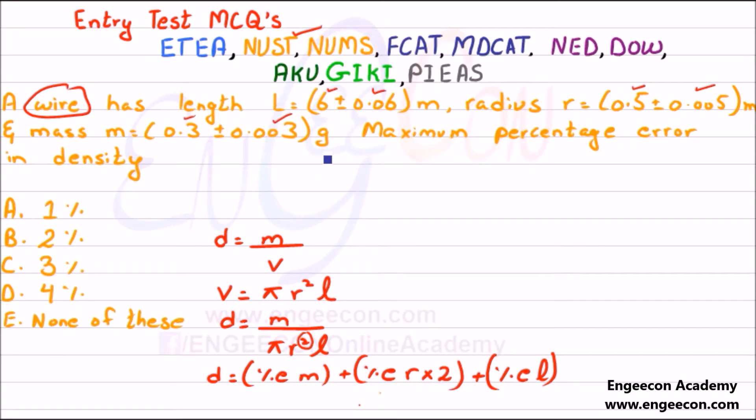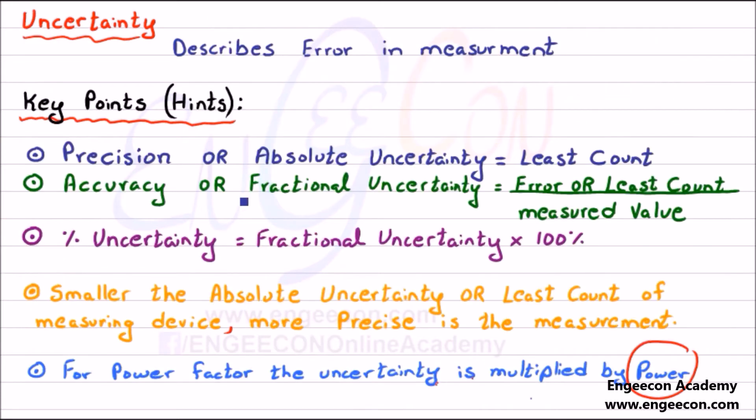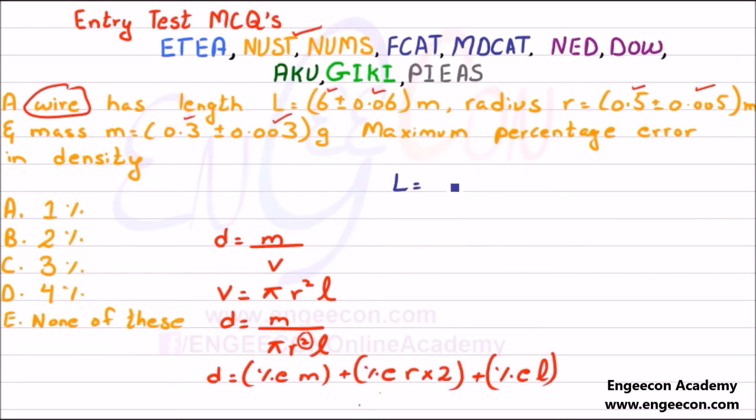For these types of MCQs, we first find the percentage uncertainty. The fractional uncertainty is given by error divided by measured value. For length, the error is 0.06 divided by 6. For radius, the error is 0.005 divided by 0.5. For mass, the error is 0.003 divided by 0.3. So we have 0.01 fractional uncertainty or error.